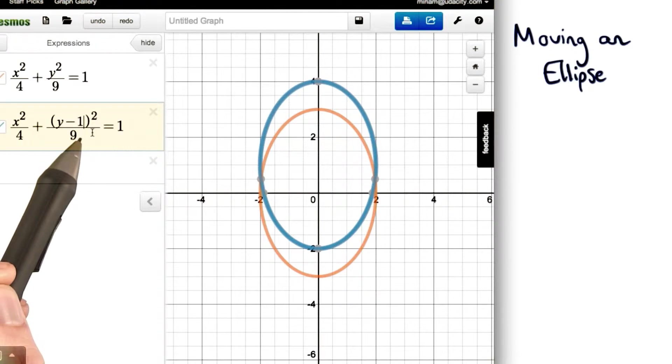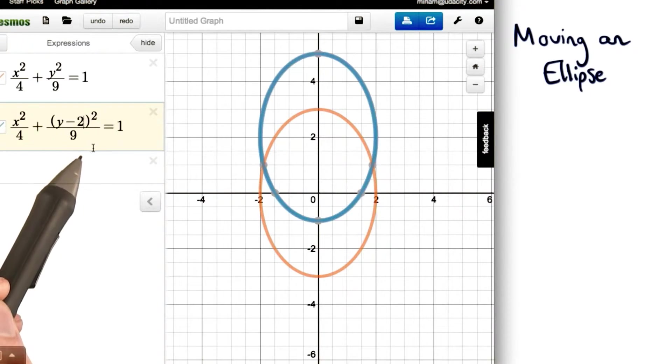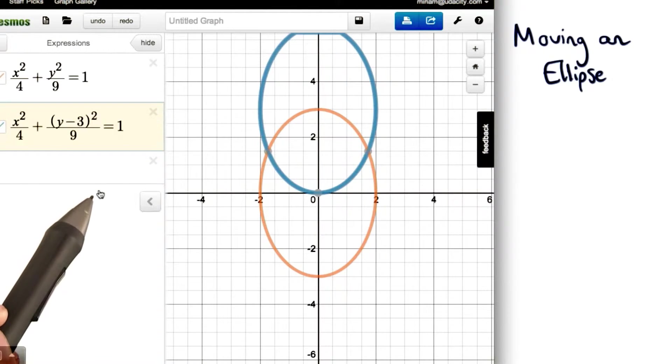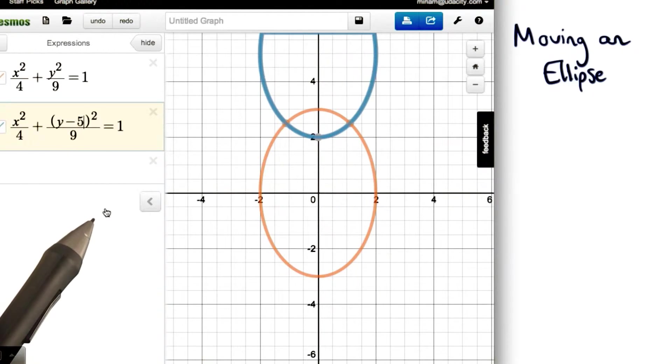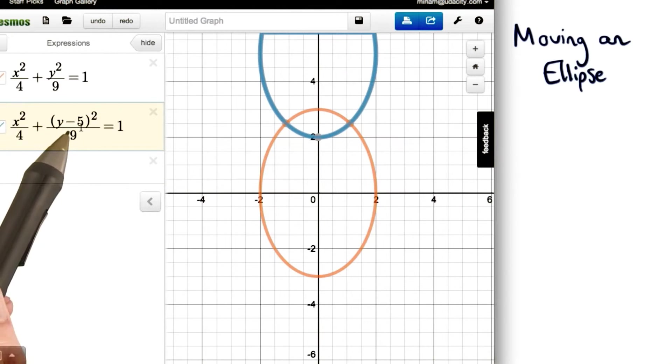And instead of just shifting up one unit, I could also shift it up two units. We could shift it up three units, four units, or even five units. The key thing to remember is that this sign is the opposite of the direction the ellipse moves.